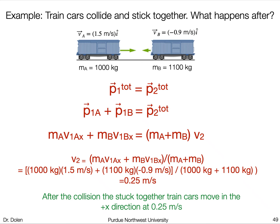Let's continue our discussion of momentum conservation with this example. We have two train cars moving in opposite directions. They collide and they stick together. The question is what happens after — are they stopped dead, are they traveling to the left afterwards, are they traveling to the right afterwards?